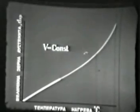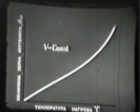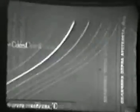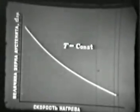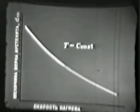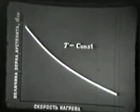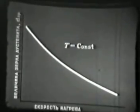При неизменной скорости нагрева аустенитное зерно укрупняется с ростом температуры, но для данной температуры оно тем мельче, чем выше скорость нагрева в области фазовых превращений. Это приводит к получению дисперсной мартенситной структуры стали, закалённой после быстрого нагрева, в отличие от крупной игольчатой мартенситной структуры после закалки с медленным нагревом.